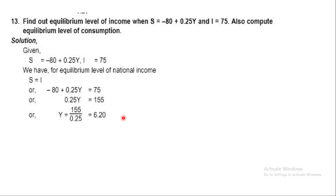Question 13: Find the equilibrium level of income when S = minus 80 + 0.25Y and I = 75; also compute the equilibrium level of consumption. At equilibrium S = I: minus 80 + 0.5Y = 75. So 0.5Y = 155, giving Y = 155 divided by 0.5 = 310. The answer is 620.